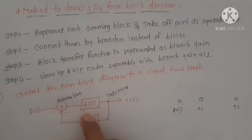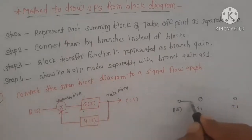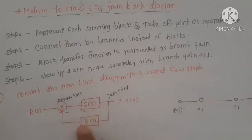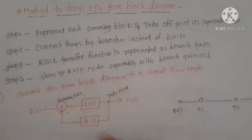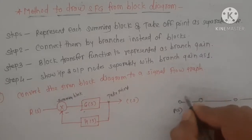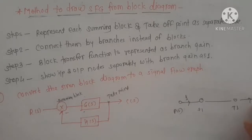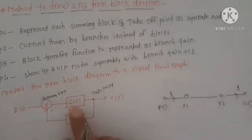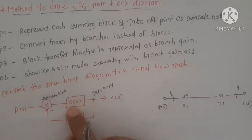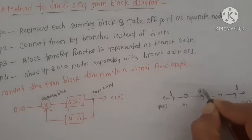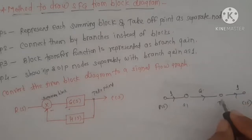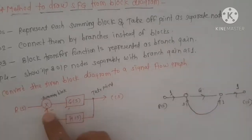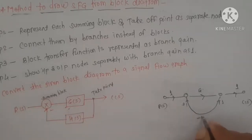Connect each node by branches instead of blocks. The transfer function is represented as a branch gain. For input and output, the branch gain is 1. Here the input node is present, so branch gain is 1. For the output node, branch gain is 1. In the middle, before the takeoff point, G of S transfer function is present, so we represent it as G as the branch gain. From the takeoff point to the summing point, one block is present, and it is negative. So we mark it as minus H.